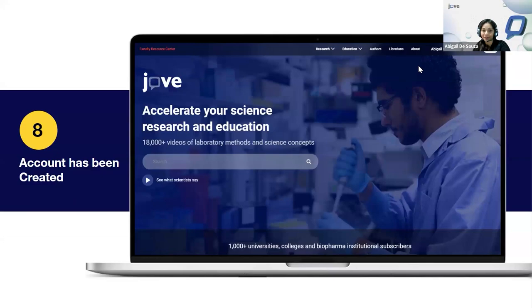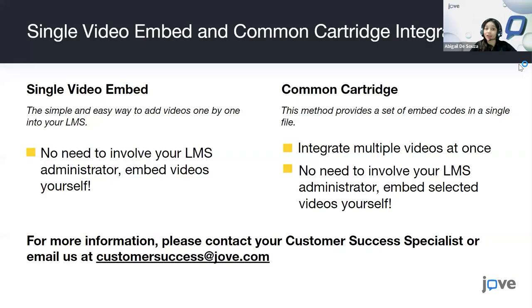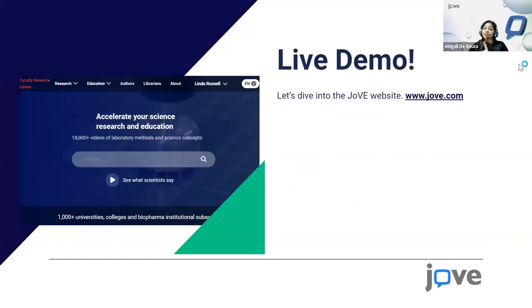Once you have a JoVE account, there are two ways to share resources with your students. One is a single video embed — just one video at a time — into an existing or new course page. The second is a Common Cartridge: a collection of several videos that you can insert as an entire playlist in one go into your learning management system. I will showcase how to insert into Moodle and Blackboard.